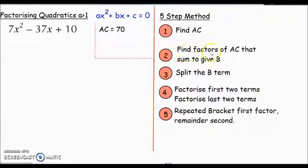Moving on to step 2: find factors of AC that sum to give B. What is the B number? The B coefficient, the number in front of x, is -37. We need to find factors of 70 that make -37 when you add them together. I'm thinking of 70, and I know 2 × 35 gives 35, but that's positive 37. If I make them both negative, well -2 and -35 add up to -37.